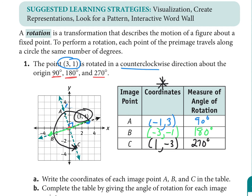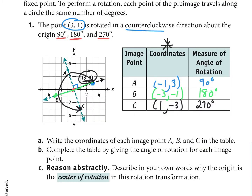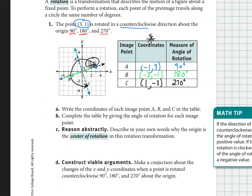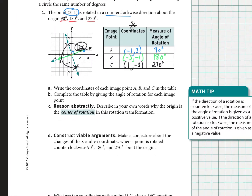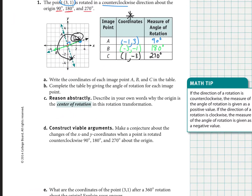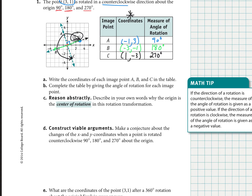So the question is: can we figure out how the original coordinates help us determine where the image will end up after each rotation? Let's make a conjecture about the changes to x and y coordinates for each rotation. Our original point was (3, 1), and for a 90-degree rotation, point A ended up at negative one, three.